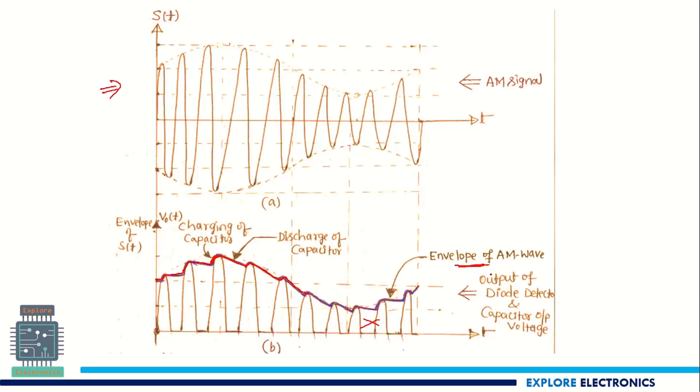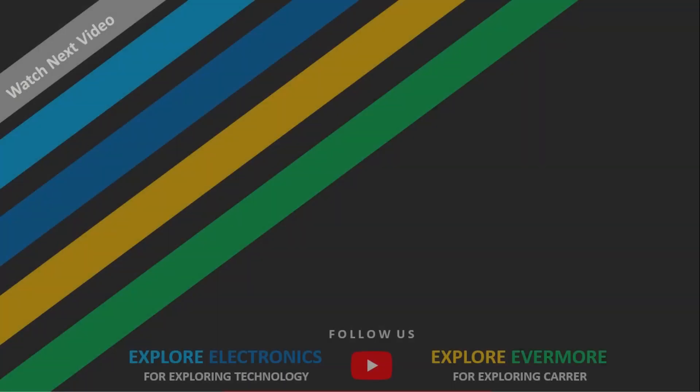So this carrier will be removed and we are going to get the envelope at the output. So that will be the demodulation of AM wave by using envelope detector. We can get back our original signal at the output. Thank you.